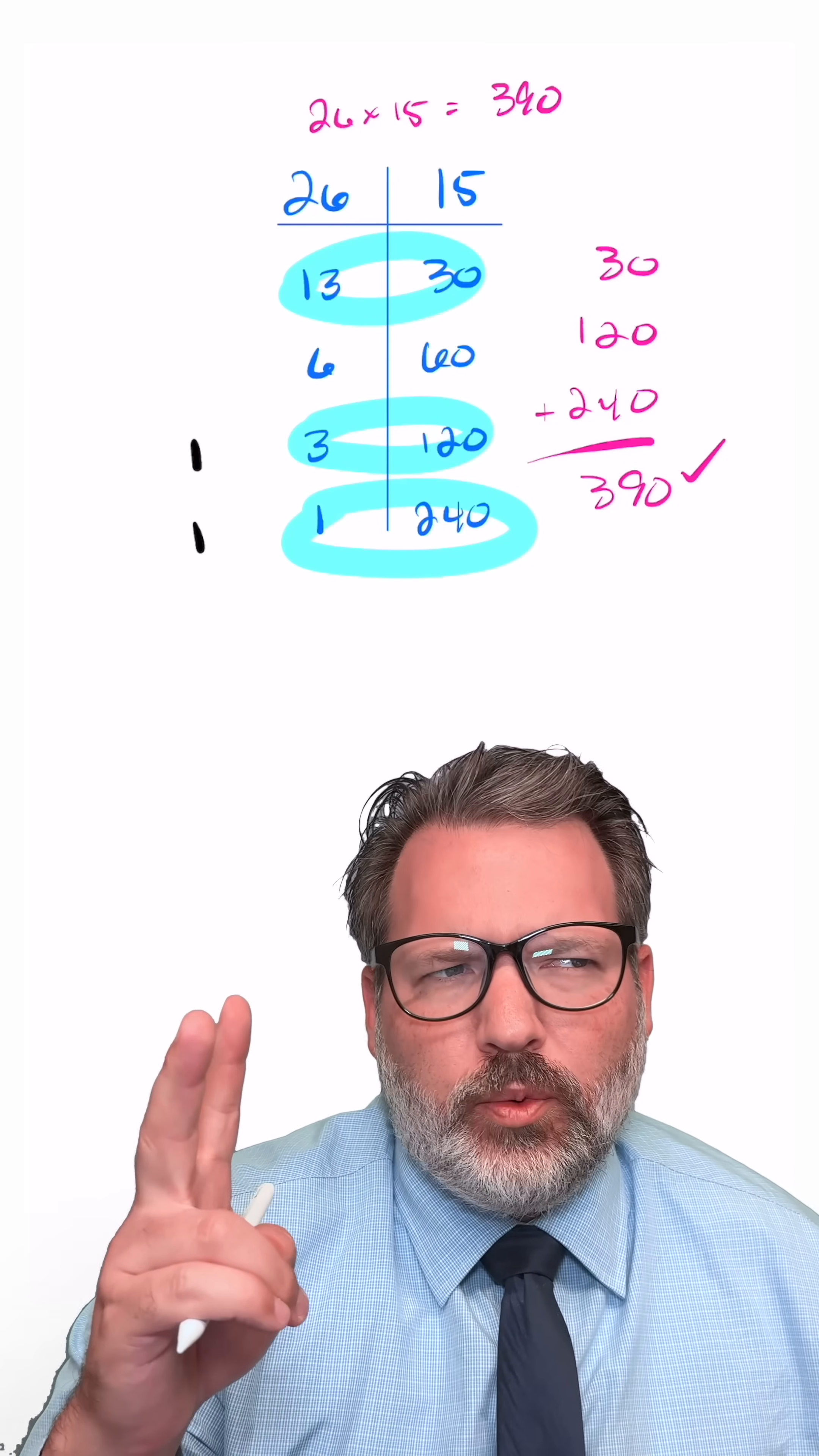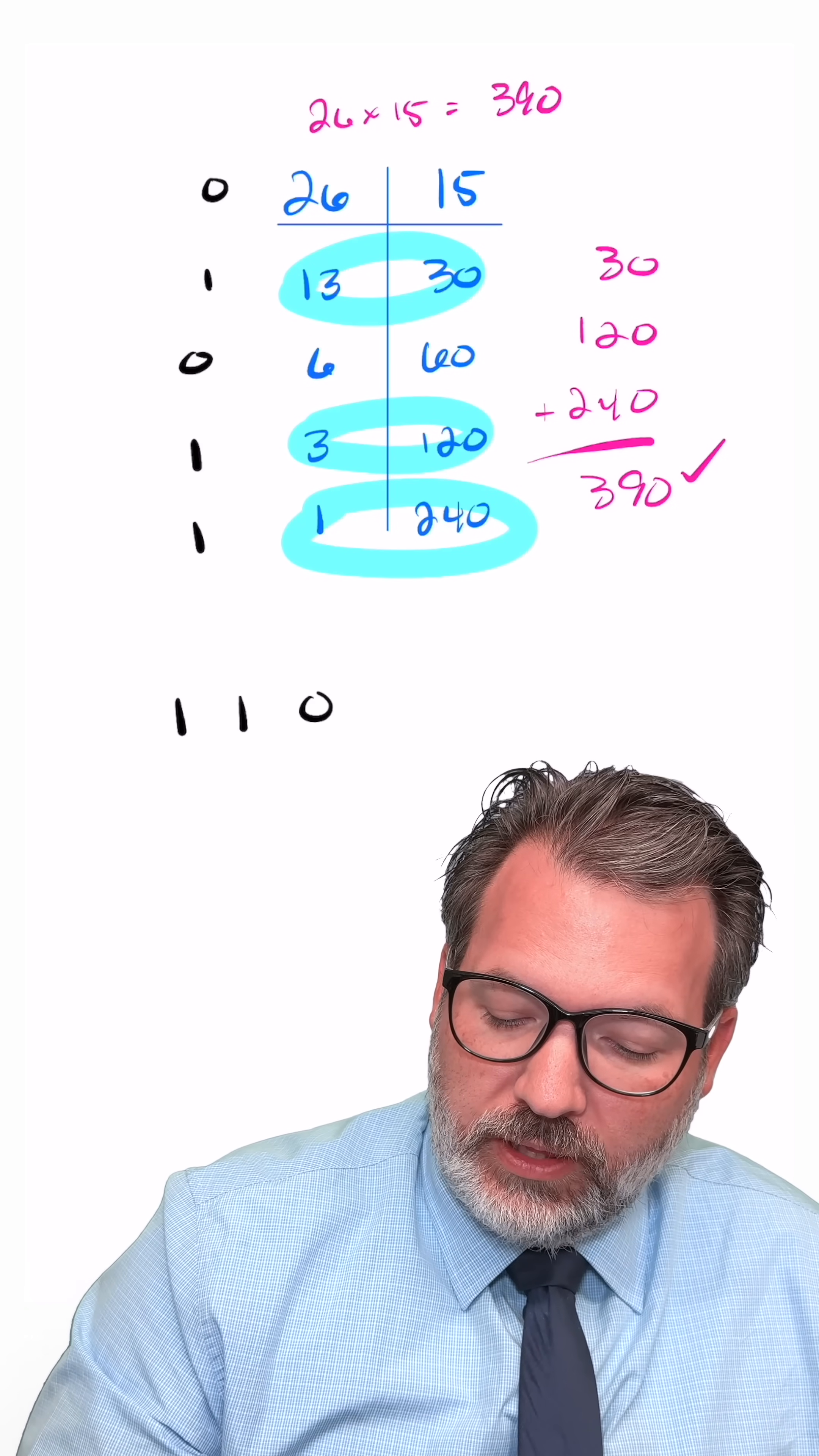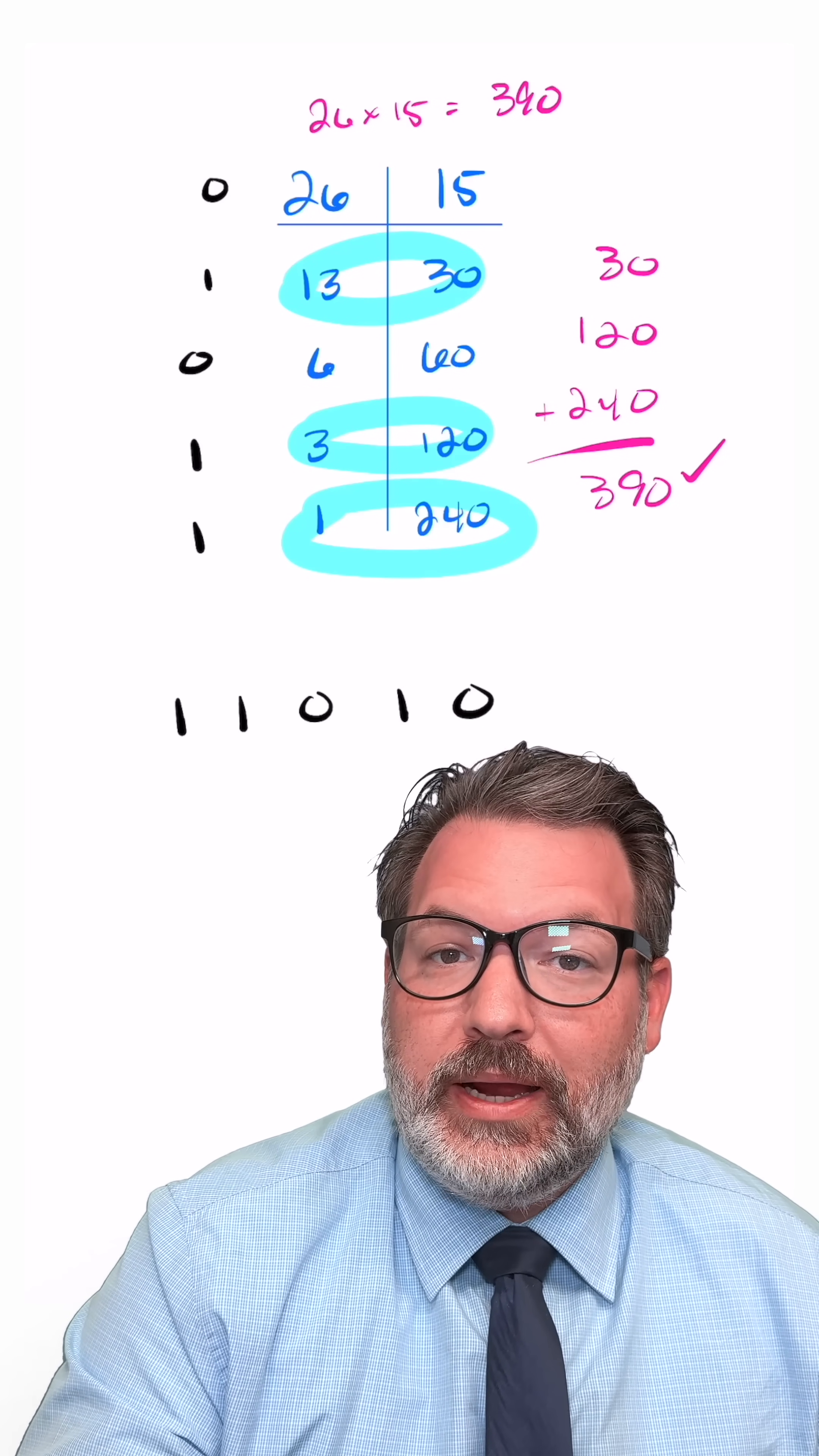Every time we have an odd number that we keep that value on the right side, we're going to represent that with a 1. And every time we have an even number, we're going to ignore that. So here, the left side is basically encoding the binary number 11,010. But of course, it's not 1,000 because it's a binary number.